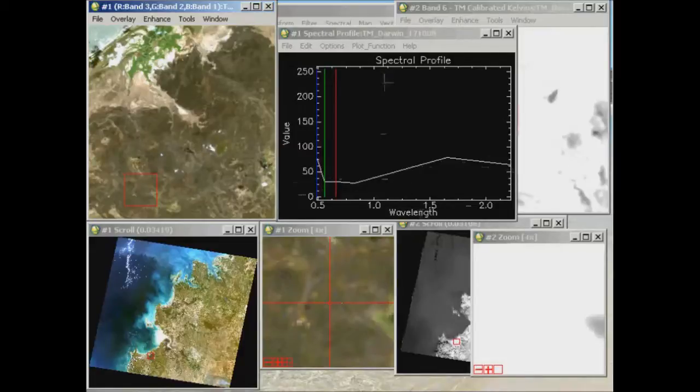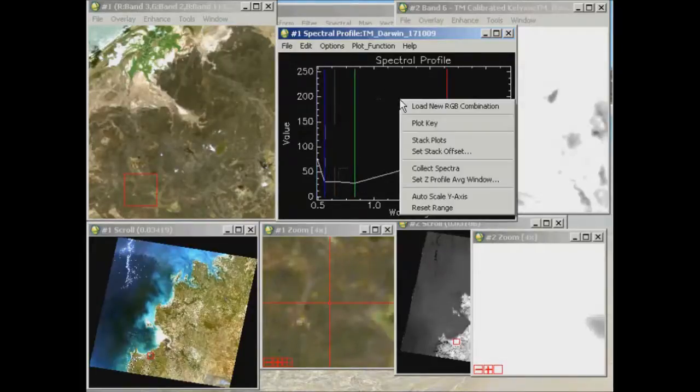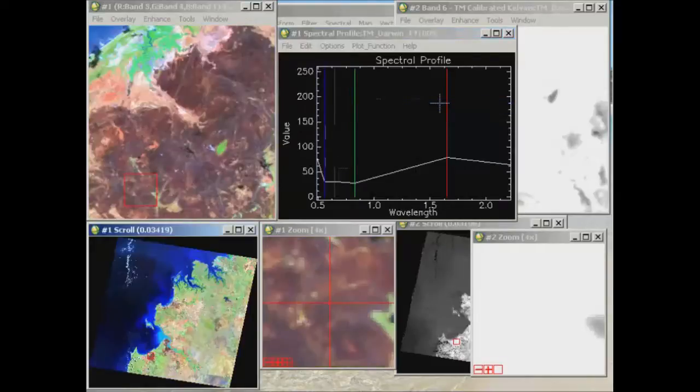I can also change my band combination from this window as well. So here we've got a standard 3, 2, 1. If I left click and hold on one of my vertical lines, I can shift that over to a different band center. So I'll do that with all three, and then if I right click and go load new RGB combination, we'll see that the color display changes also.